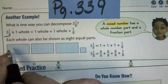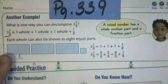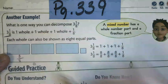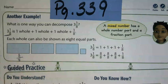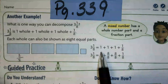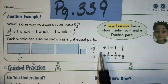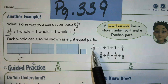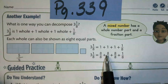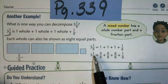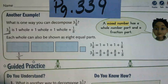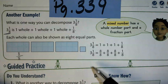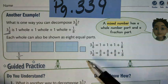We can also change these whole ones into fractions, because one whole just means the whole thing has been shaded in. How many pieces have been shaded in? Eight pieces. How many does it take to make the whole? Eight. When the numerator and denominator are the same it equals one whole. So 8/8 plus 8/8 plus 8/8 plus 1/8 is also equal to 3 and 1/8. When we use mixed numbers we can write the whole number as a fraction or keep the whole number — either way works.